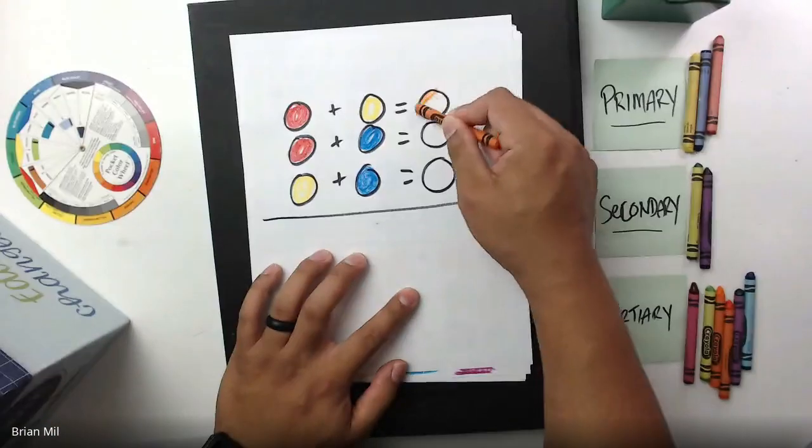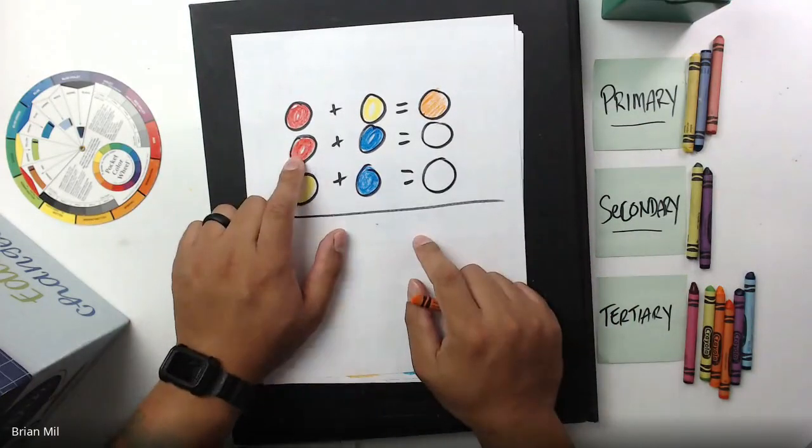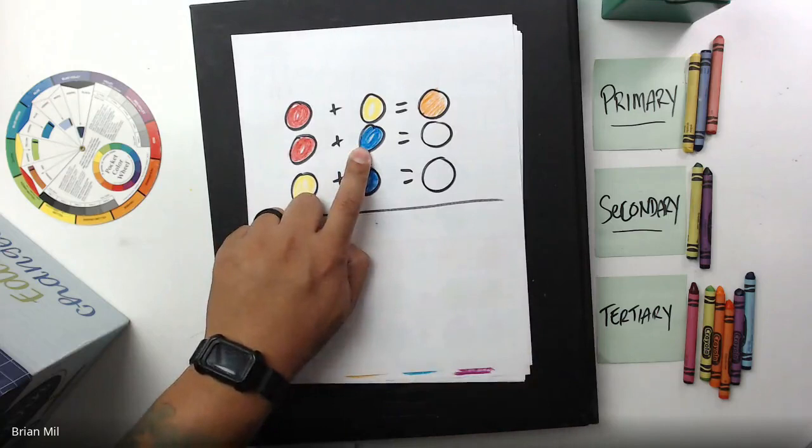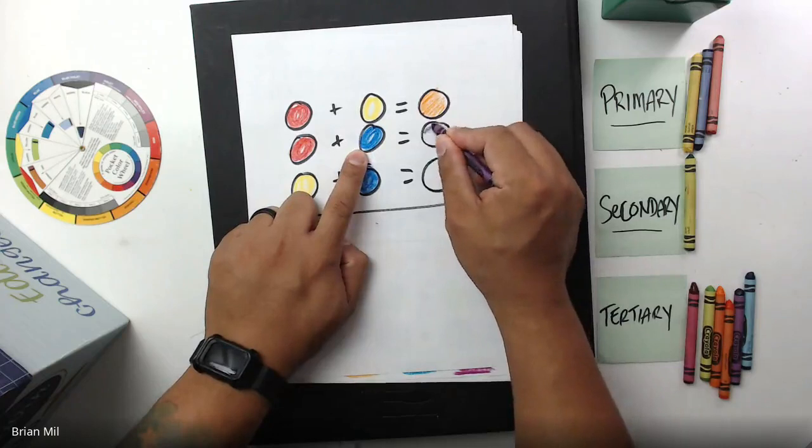The next one is red plus blue. Red plus blue equals purple, also known as violet.